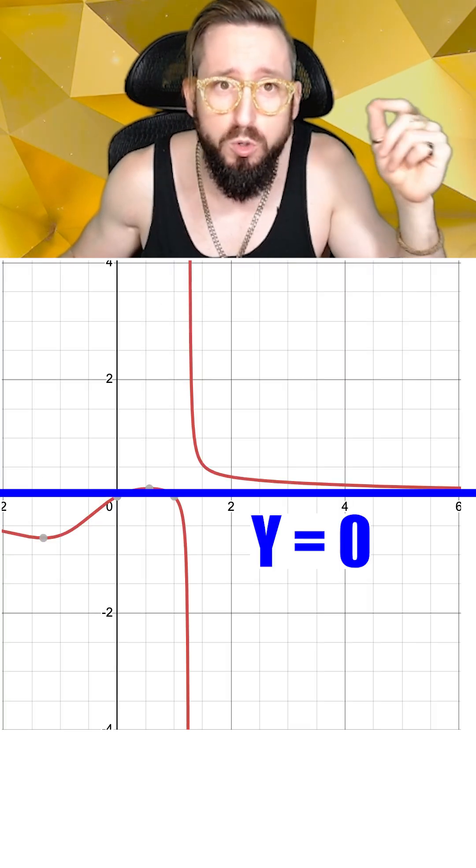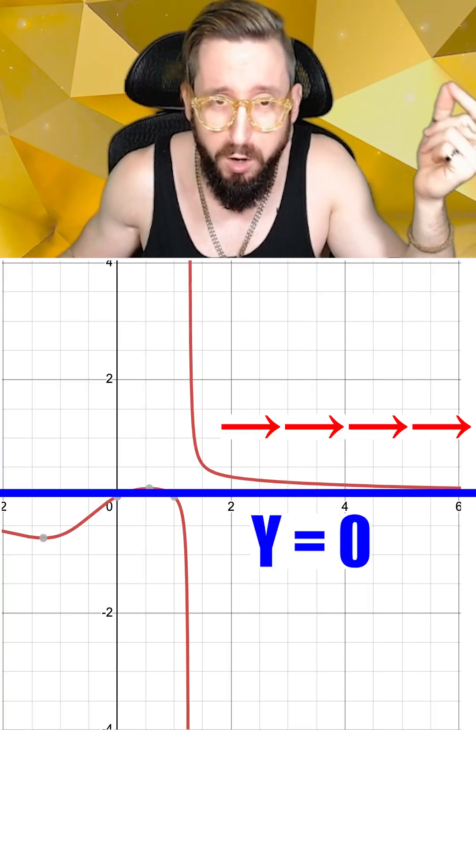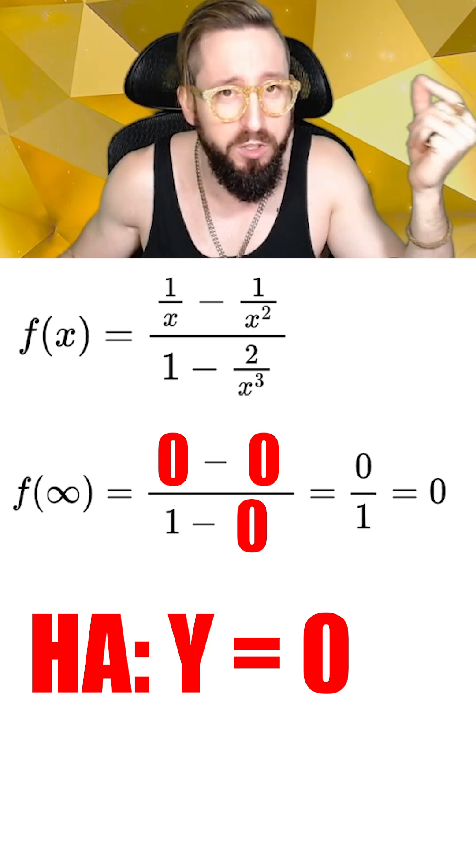So we can say that this function will approach y equals zero as we go really far to the right, and thus the function has a horizontal asymptote at y equals zero.